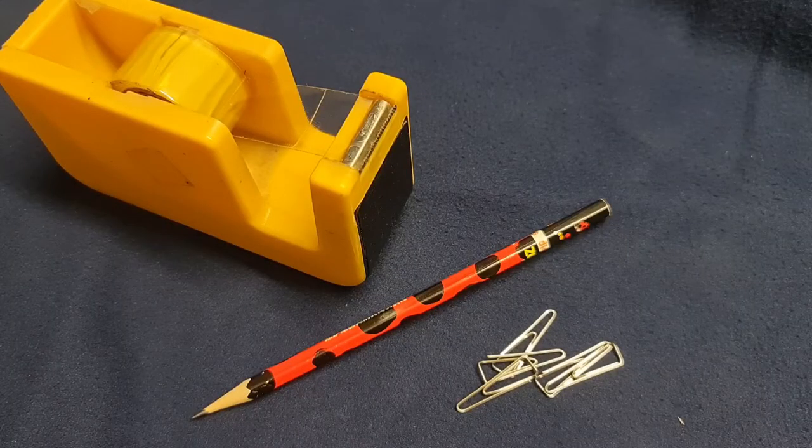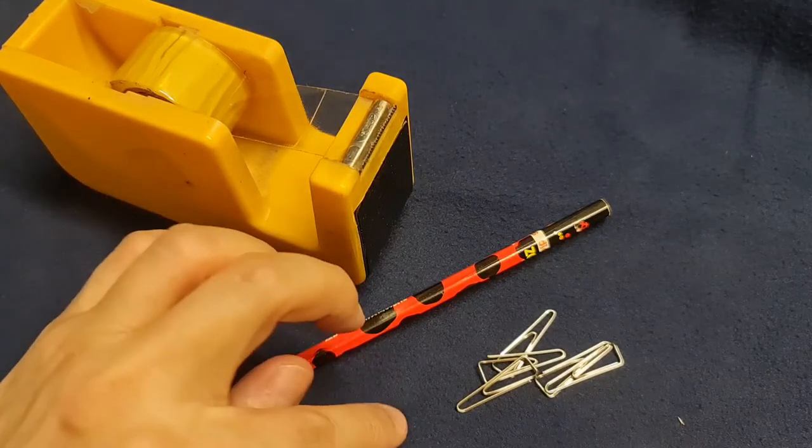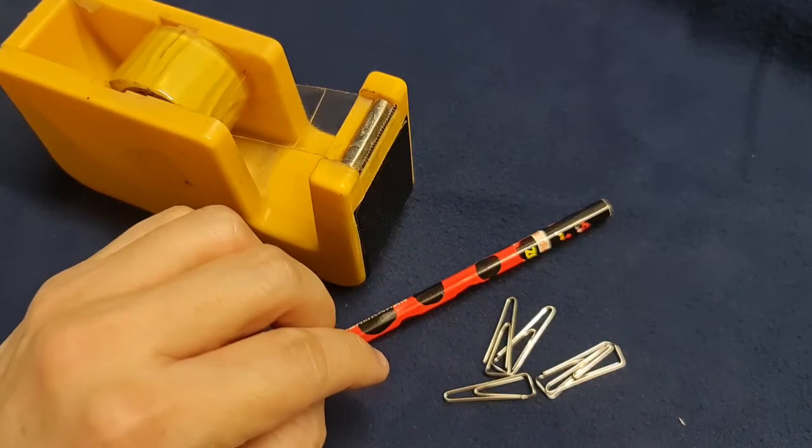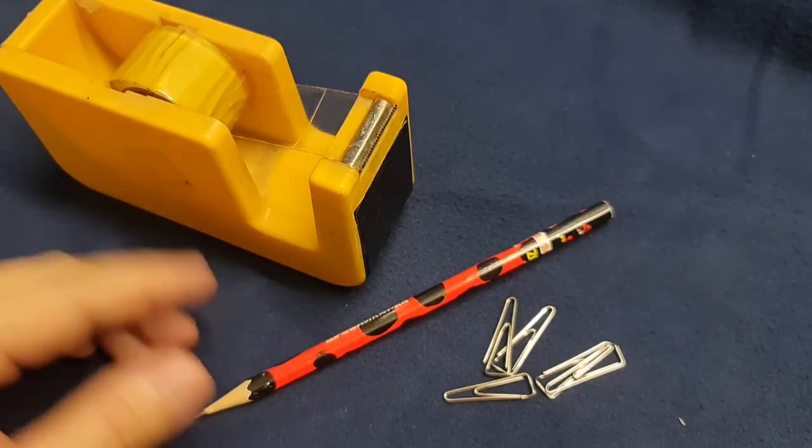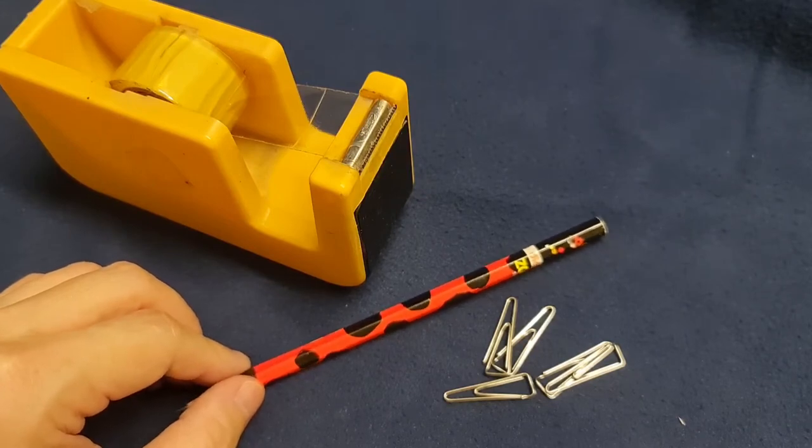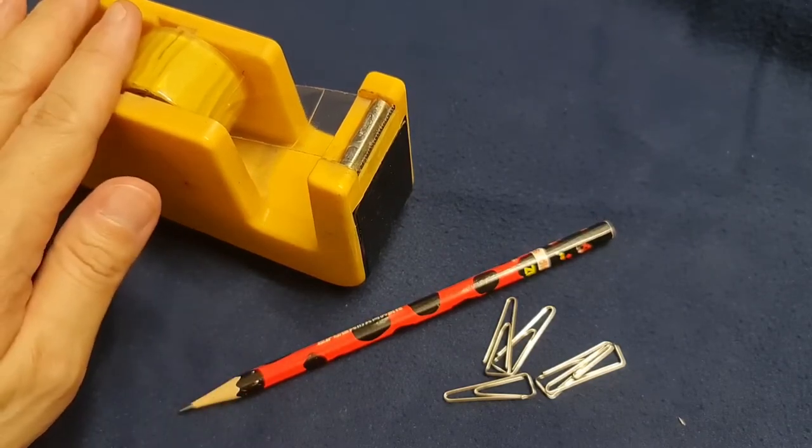So this is what you need to make your own wick dipper. Some paper clips, these are just the normal office ones, you can get jumbo clips if you want. A pencil, or it could be a chopstick or a pen, just something that you can attach your wick dipper to for extra length, and sellotape.